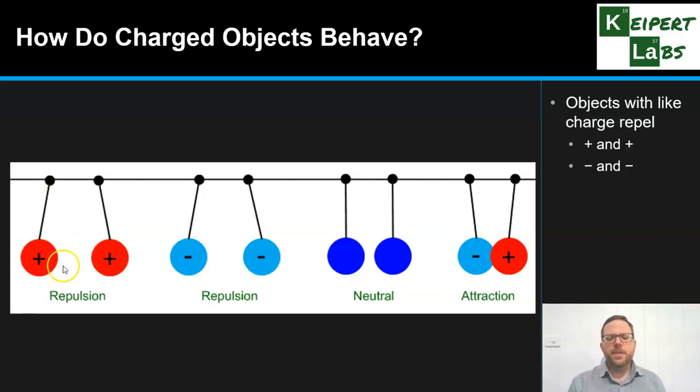You can see this with the positive and positive and the negative and negative in the left-hand side of this image. The two objects that have positive charges will move away from each other, as will two objects with negative charge. When objects that are neutral have no charge would just hang straight, hanging down like you can see there.